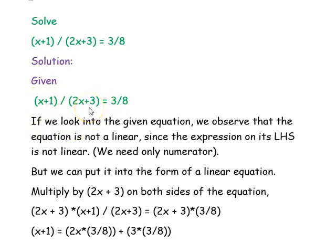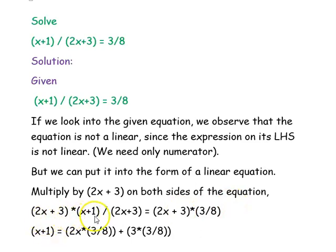But we can make it linear by cross-multiplying — that is, multiplying (2x + 3) on both sides of the equation. So, (2x + 3) times (x + 1) divided by (2x + 3) equals (2x + 3) times 3 by 8.